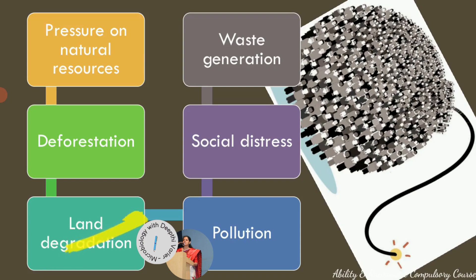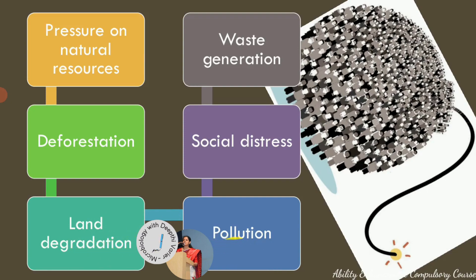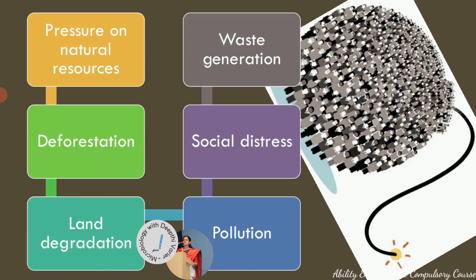Because we have cut down forests, it leads to land degradation and eventually pollution — not only land pollution, but other natural resources get polluted too: air pollution, water pollution, and soil pollution. Land degradation and pollution together lead to climate change, which is what is happening in the world right now.